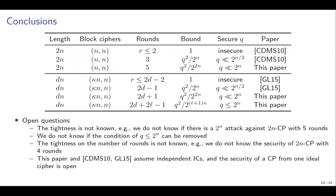To conclude: in this work we showed that with 2D plus 2L minus 1 rounds, we achieve this security bound provided the number of queries is at most 2^(DN). Several open questions remain: the tightness is not known — we do not know if there is a 2^(DN) attack against the 2N-bit construction with 5 rounds, nor whether the condition on the number of queries can be removed. The tightness on the number of rounds is also unknown, e.g., the security of the 2N-bit construction with 4 rounds. Finally, this paper assumes independent ideal ciphers, and the security using one ideal cipher is left open.